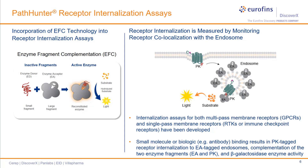The internalization assay consists of a cell line expressing the EA enzyme fragment localized to the endosome, and the target receptor fused at the C-terminus to the smaller ED fragment, also called ProLink and shortened to PK. When a small ligand molecule or a biologic binds the receptor, receptor internalization is detected when the receptor moves to the endosome and the PK and EA enzyme fragments co-localize and complement to result in a gain of signal. Because the PK enzyme can be tagged to both multi- and single-pass membrane receptors, this assay format is universal for many classes of membrane receptors, such as GPCRs and receptor tyrosine kinases.